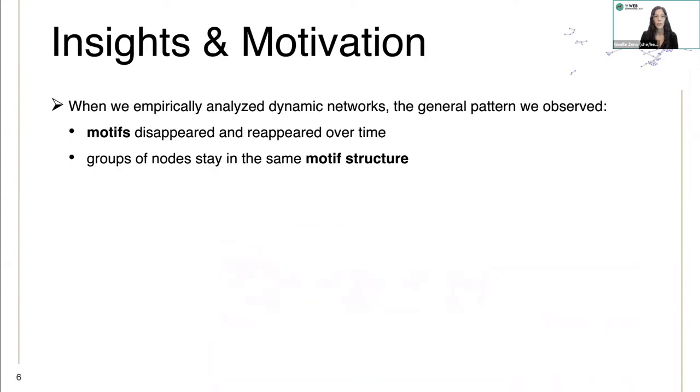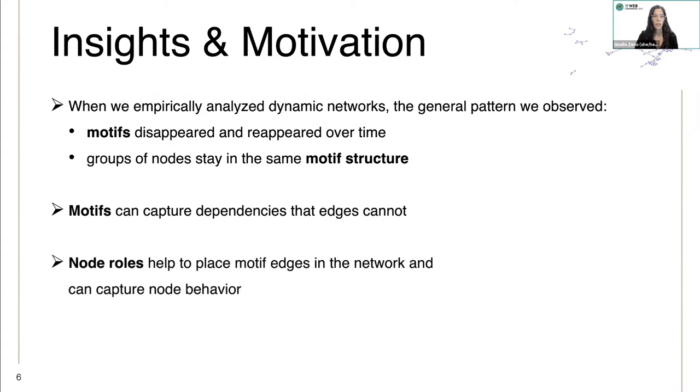Our insights and motivation are that when we empirically analyze dynamic networks, the general pattern we observe is that motifs disappeared and reappeared over time, and that groups of nodes would stay in the same motif structure. Using motifs can capture dependencies that edges cannot, and the node rules help to place motif edges in the network and they can capture node behavior.